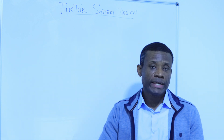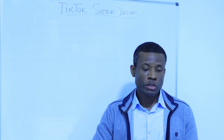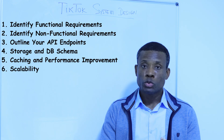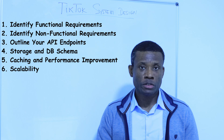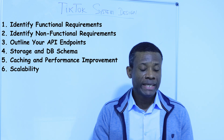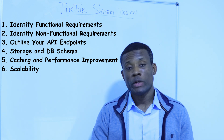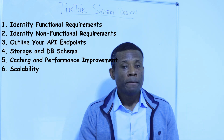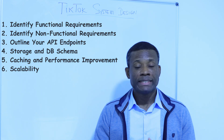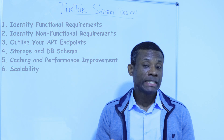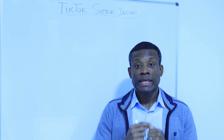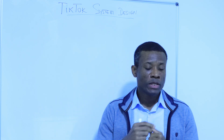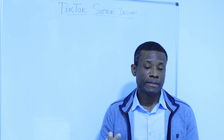So the first one: identify the functional requirements. Number two: identify non-functional requirements. Number three: identify your API endpoints. Number four: make a choice of database and outline your database schema. Number five: caching, pre-caching and performance improvement. Number six: scalability.